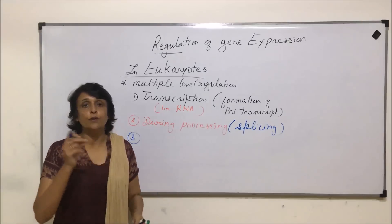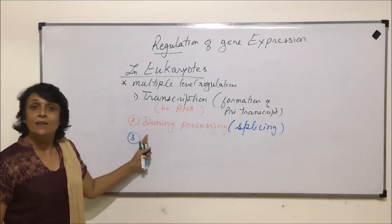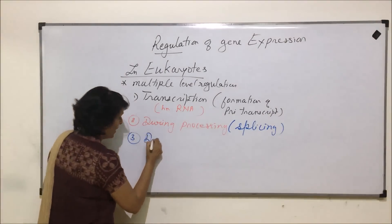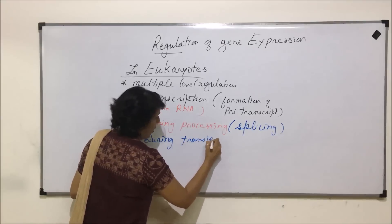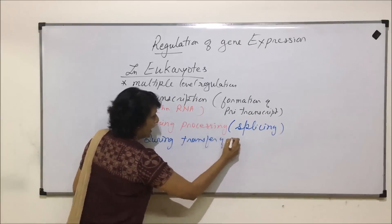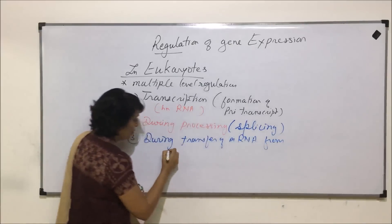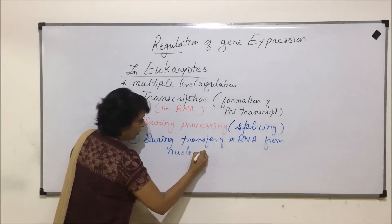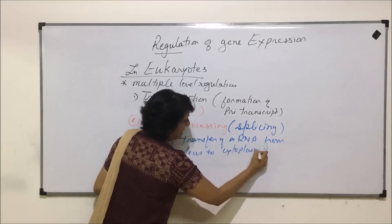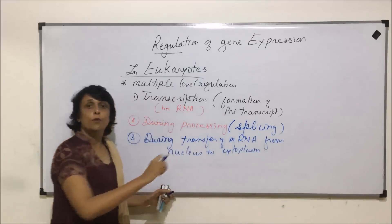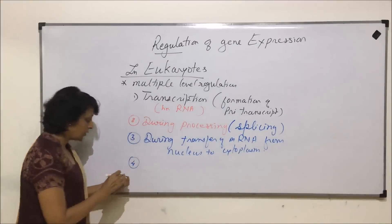Third, once splicing has occurred and mRNA is formed — meaning exons have joined and capping and tailing have taken place — when this mRNA comes out of the nucleus to the cytoplasm, that transfer can also be checked and regulated.